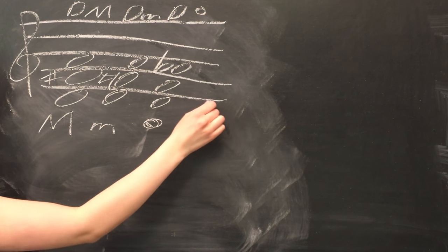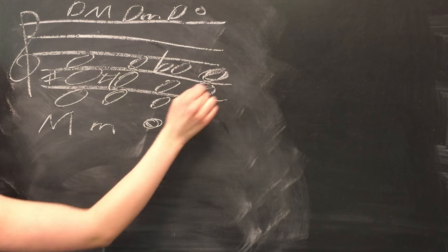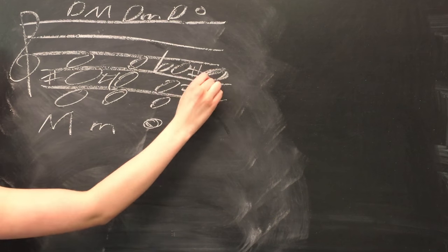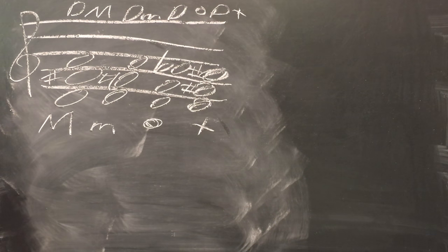To make it diminished, we lower the fifth, the A, by one half-step to an Ab. To make an augmented chord, we start with a major chord and raise the fifth, the A, by one half-step to an A sharp.